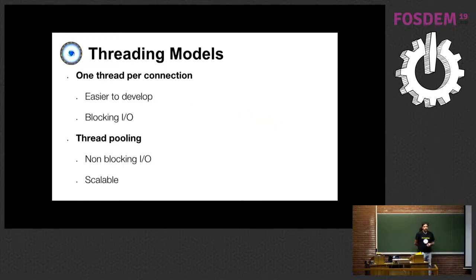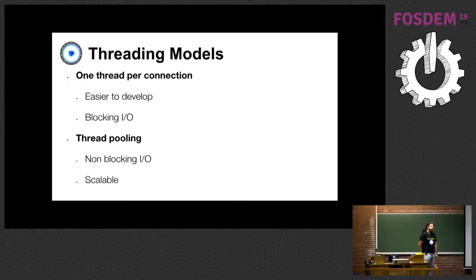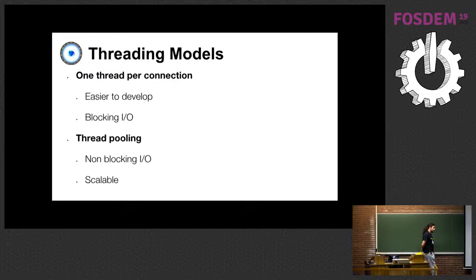A quick overview of the various threading models that can apply to any sort of software. You can have either one thread per connection, or in some other systems one process per connection, like in Postgres, or you have some thread pool.